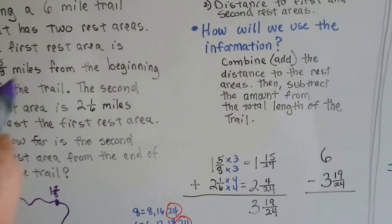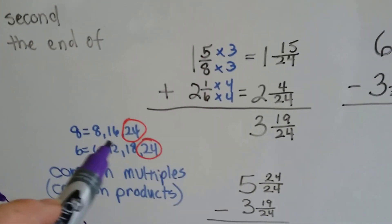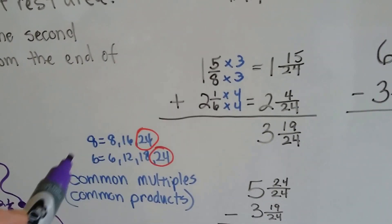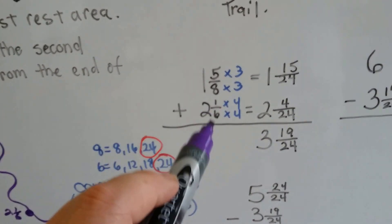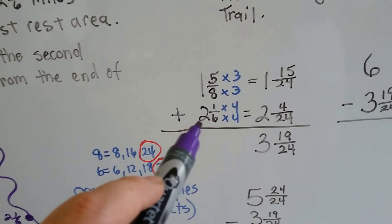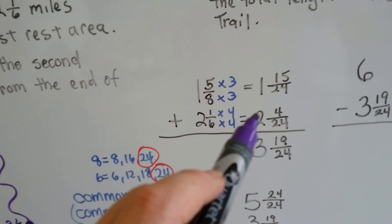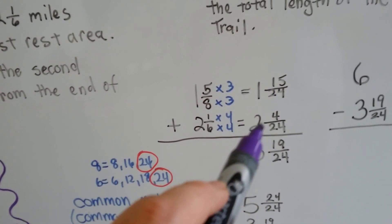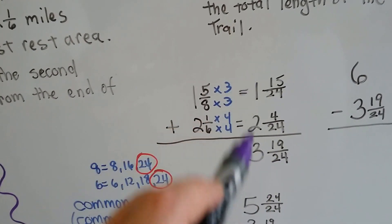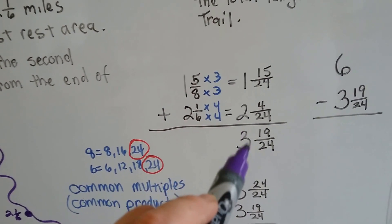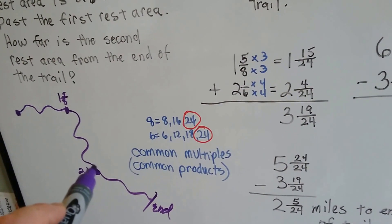We've got one and five-eighths and two and one-sixth. In order to add them, we need a common denominator. We list their common multiples and they both can meet at twenty-fourths. Eight is multiplied by three to get to twenty-fourths, and six is multiplied by four. The numerators get multiplied by the same thing. We have one and fifteen twenty-fourths and two and four twenty-fourths. We do our addition and we get three and nineteen twenty-fourths — that is the total from the beginning to the second rest area.